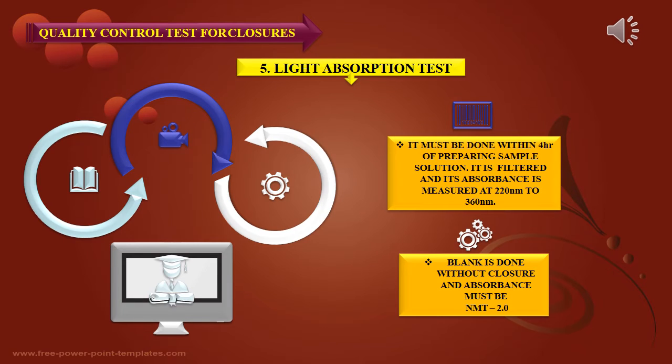For the light absorption test, it must be done within 4 hours of preparing the sample solution. The solution is filtered and its absorbance is measured at 220 nm to 360 nm in the UV range. A blank is done without closure, and absorbance must not be more than 2.